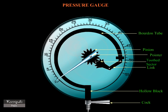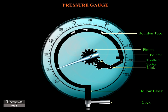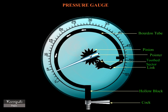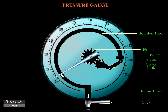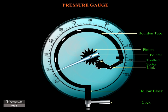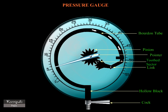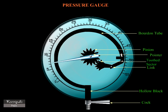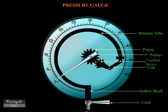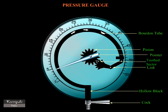The movement of the closed end of the tube is transmitted and magnified by the link and the tooth sector. The magnitude of the movement of the sector is indicated by the pointer on the dial.